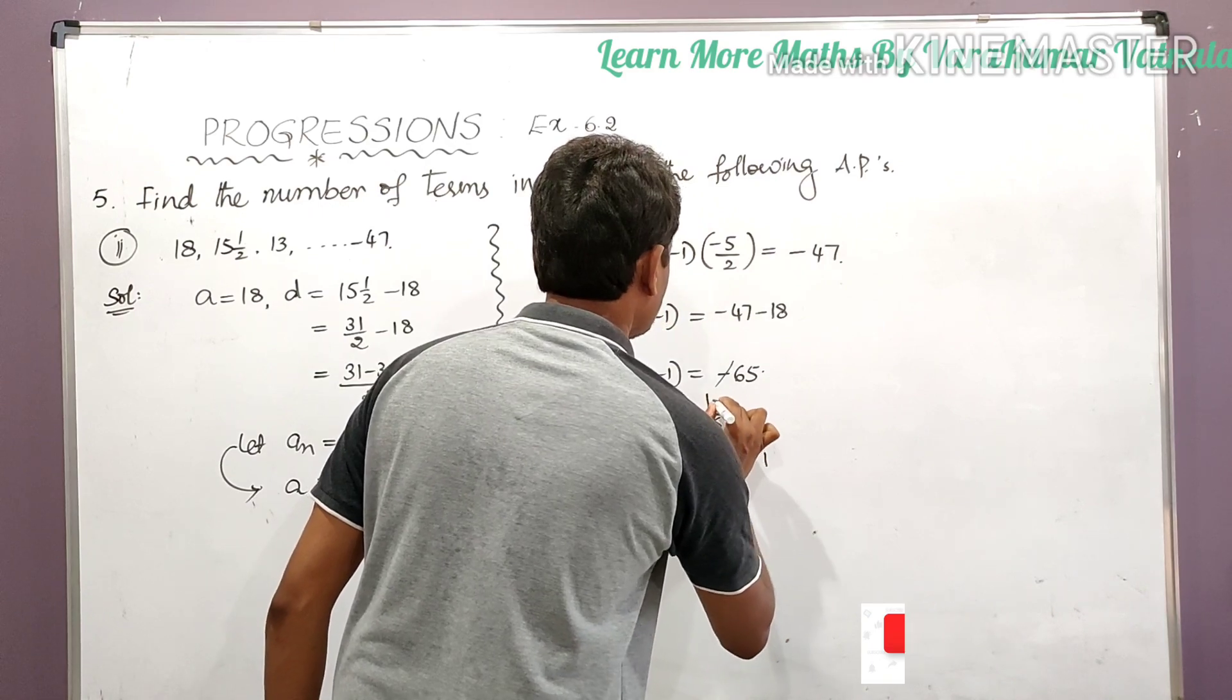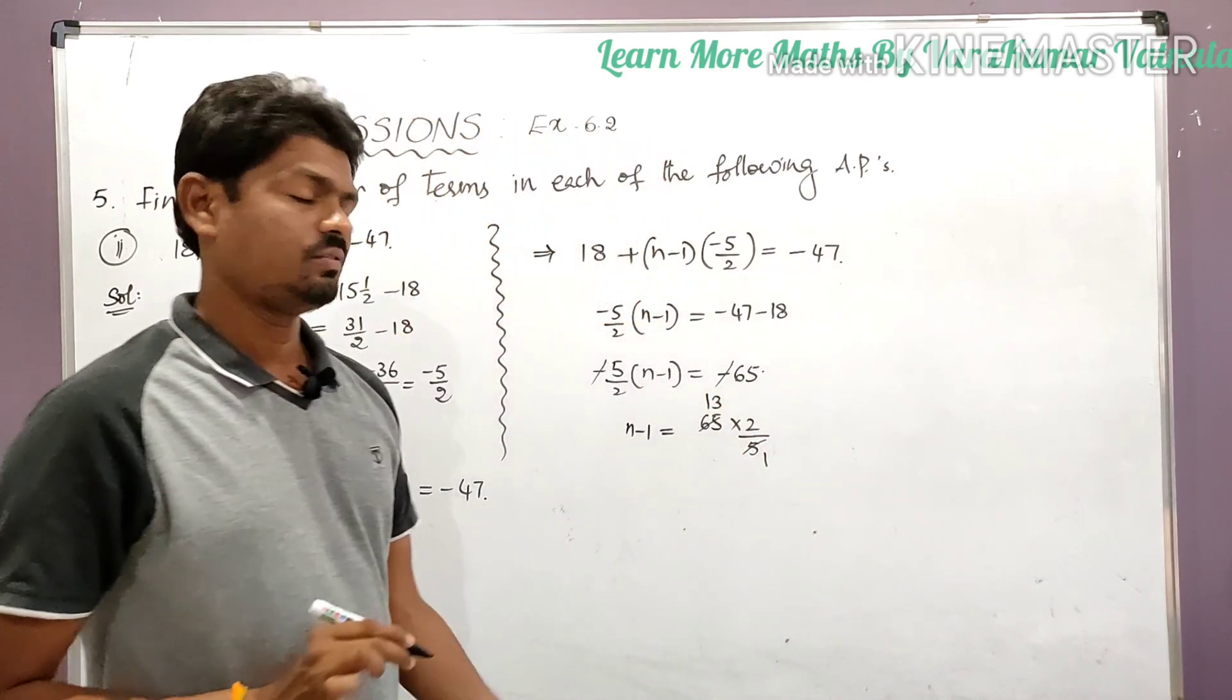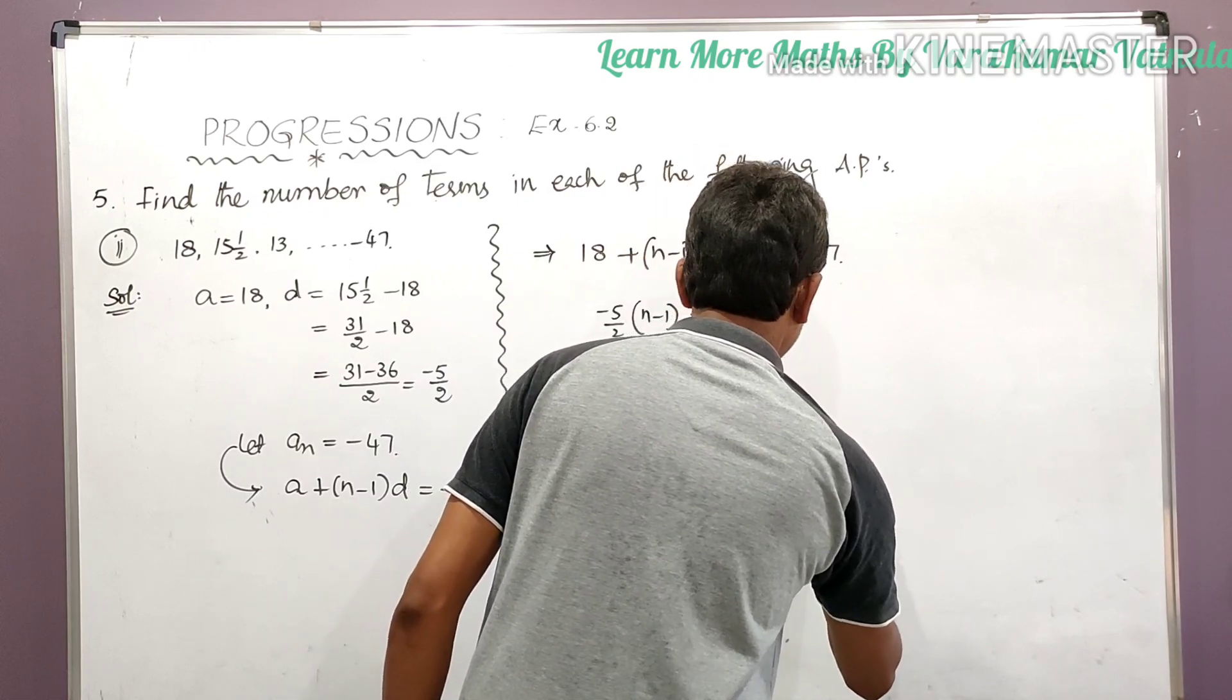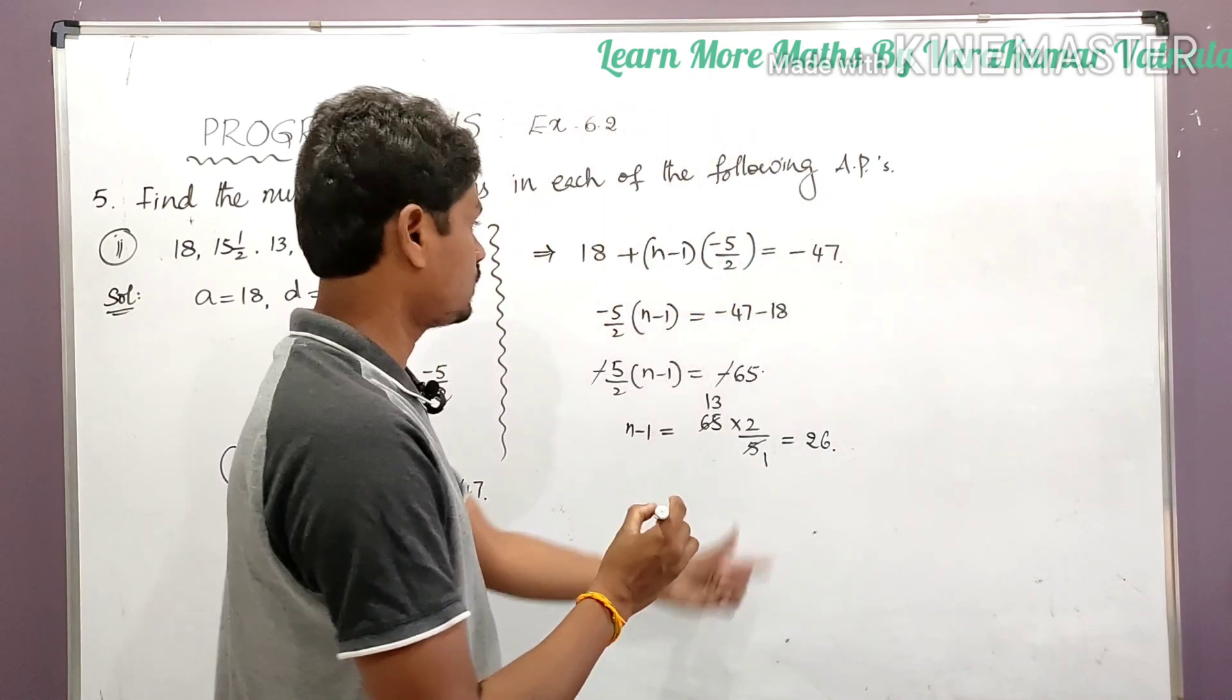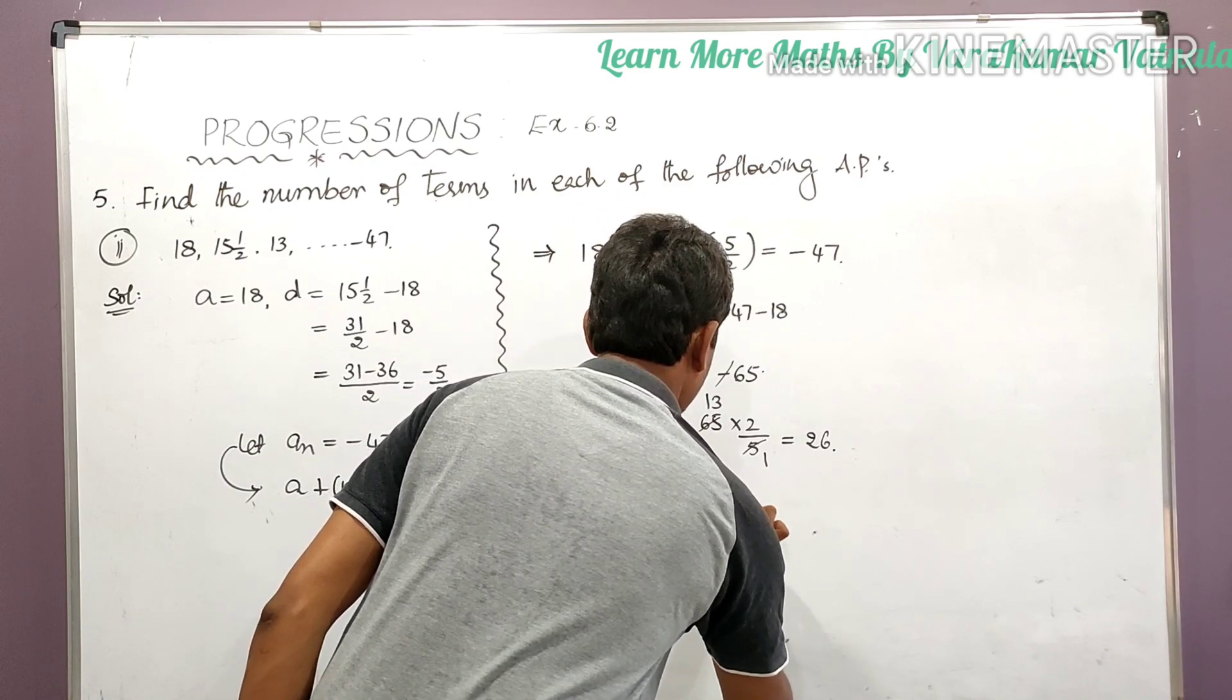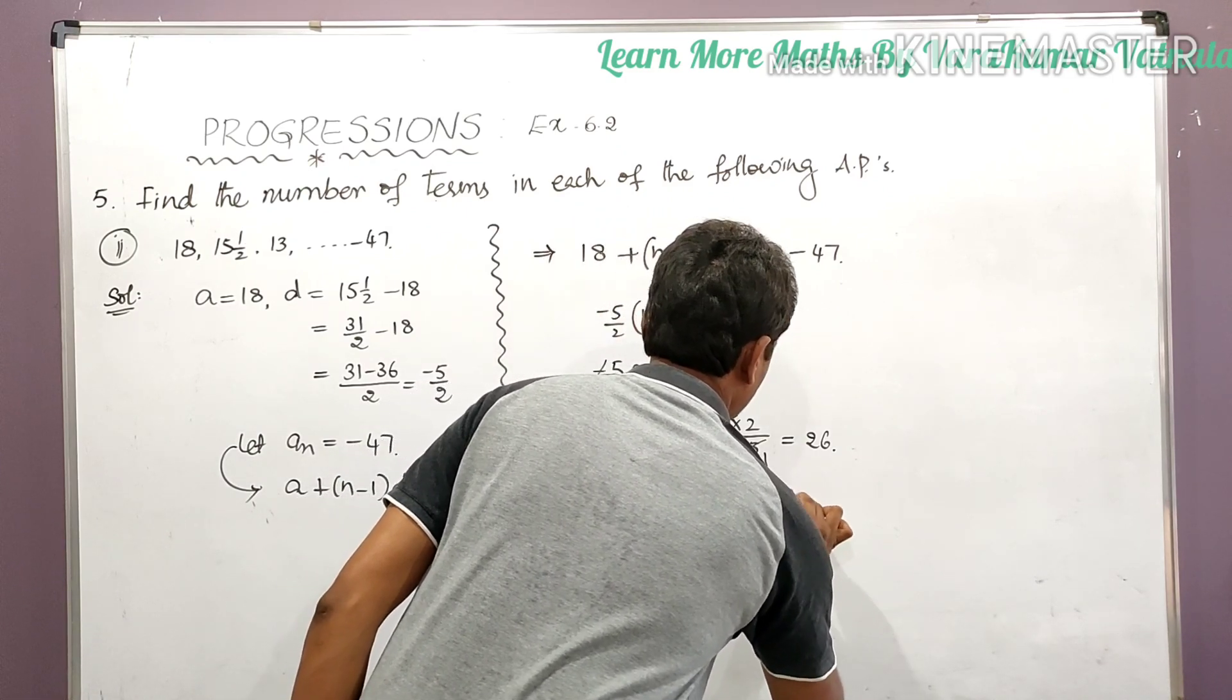So 5 ones and 5 thirteens are 65. 13 fives are 65. So 13 into 2 is equal to 26. (n minus 1) is equal to 26. Therefore n is equal to 26 plus 1, that is 27.